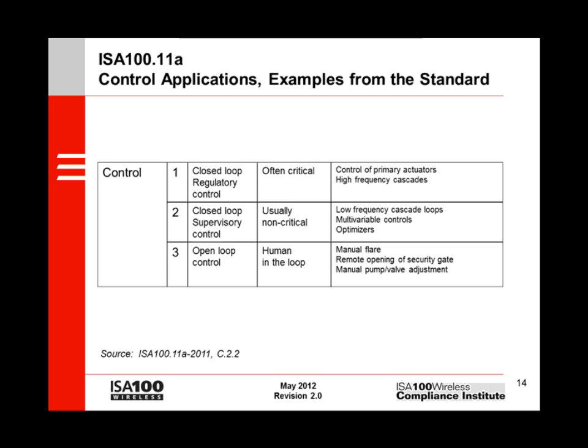Moving up to control class 2, we have closed-loop supervisory controls. These are usually non-critical. Examples include low-frequency cascade loops, multivariate controls, and optimizers. At the top of the ISA100.11a control hierarchy, we have control class 1. The standard describes direct control of primary actuators, such as where a host connection is available on demand 99.99% of the time or more, with link outages of more than a half-second intolerable, and with demand rates once every four seconds. High-frequency cascades are also mentioned.